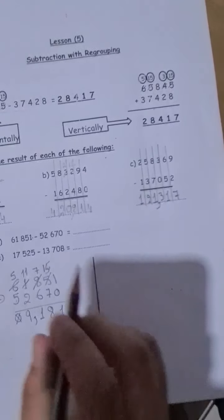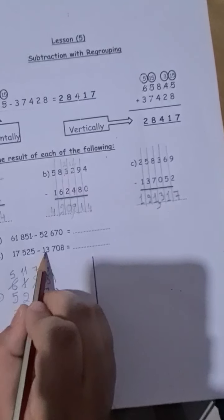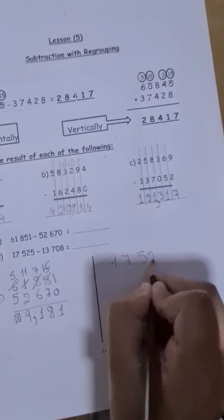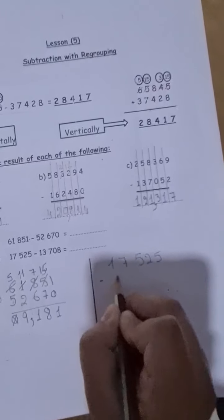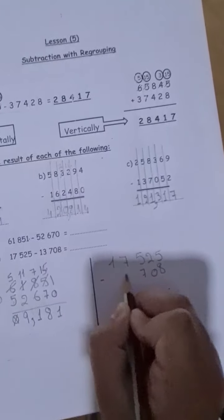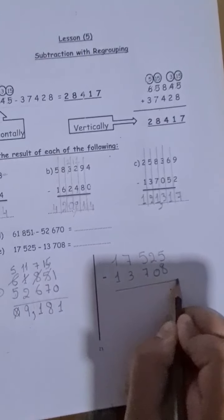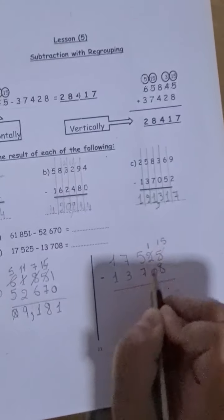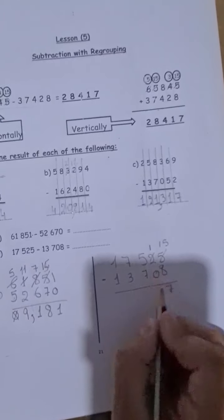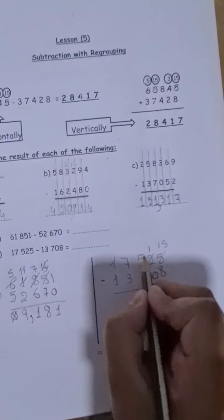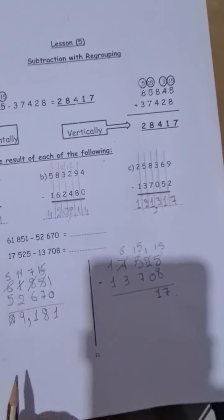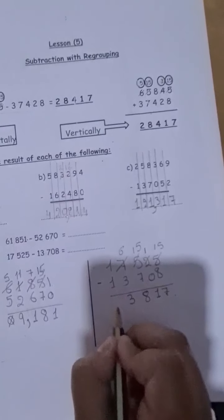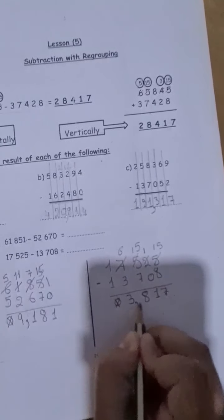The next question is 17,525 minus 13,708. Here is 17,525 minus 8 here, 0, 7, 3, and 1. 5 minus 8, we cannot. So I will borrow from the neighbor. So the 2 becomes 1, the 5 becomes 15. Here, 15 minus 8 is 7. 1 minus 0 is 1. 5 minus 7, we cannot. So it becomes 15, and the 7 becomes 6. 15 minus 7 is 8. 6 minus 3 is 3. 1 minus 1 is 0. So the answer is 3,817.